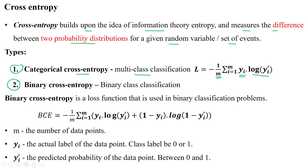Binary cross entropy is another loss function useful for binary class classification. Its formula is: minus 1 by m (number of samples) into summation of i equal to 1 to m. The first term is the actual label yi multiplied by log of the predicted label of the i-th sample, plus 1 minus yi (actual label) multiplied by log of 1 minus the predicted value of the i-th sample.